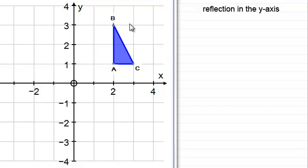In other words, if we took a shape, say like this triangle ABC, and reflected it in the y-axis, then where's it going to go to? Well, it's going to have its image over here.